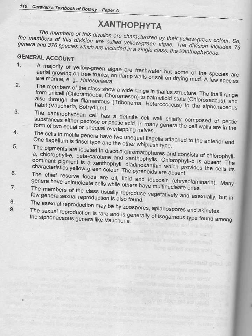Number five: the pigments are located in the disc-shaped chromatophores and consist of chlorophyll a, chlorophyll e, beta-carotene, and xanthophylls. Chlorophyll b is absent. The dominant pigment is xanthophylls — specifically diadinoxanthin — which provides the cells their characteristic yellow-green color. Pyrenoids are absent.